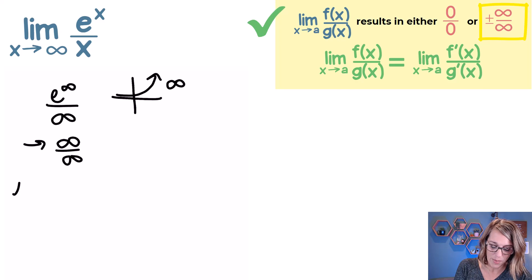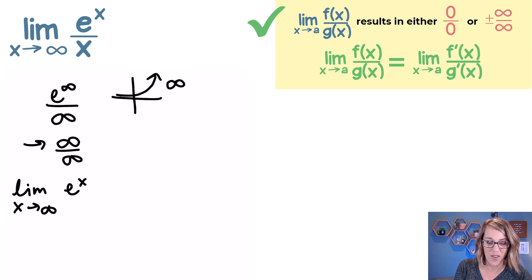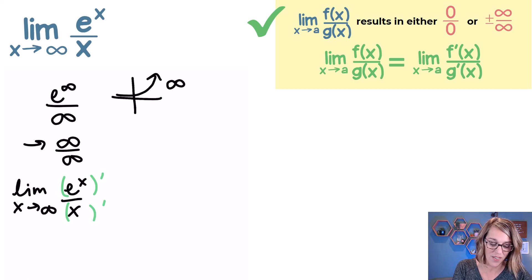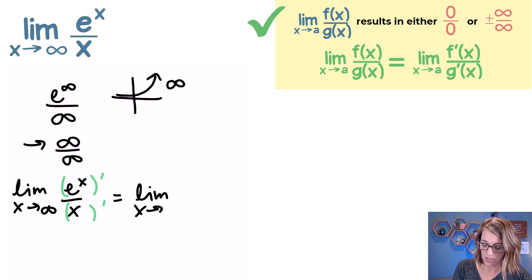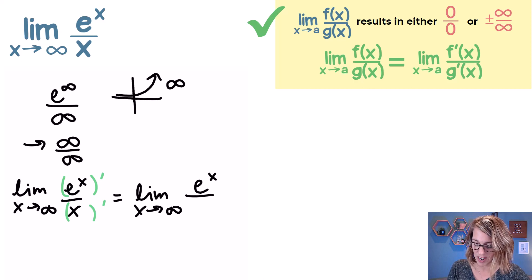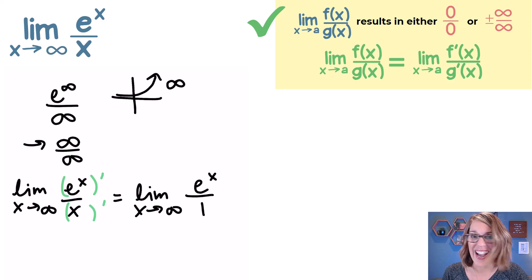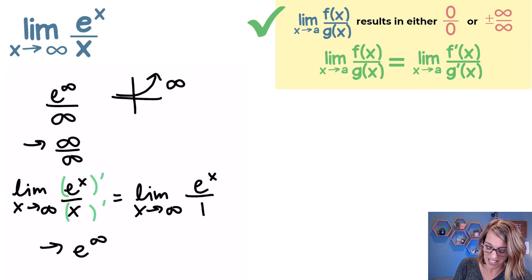So as I analyze my limit — the limit as x goes to infinity of e to the x over x — I want to take the derivative of the numerator over the derivative of the denominator; that's L'Hôpital's rule. This gives the limit as x approaches infinity of e to the x — whose derivative is just e to the x — all over 1. As I plug infinity in, I don't get an indeterminate form; this goes to e to the infinity, which goes to infinity.